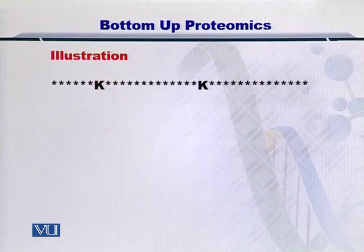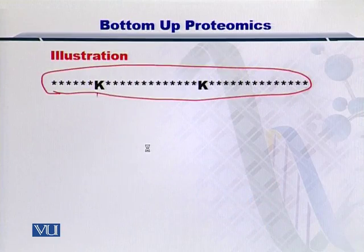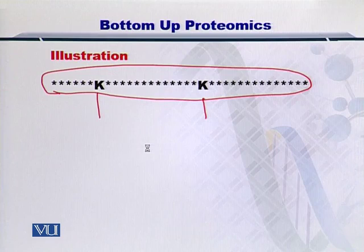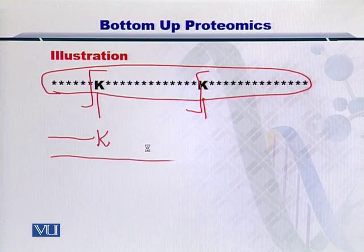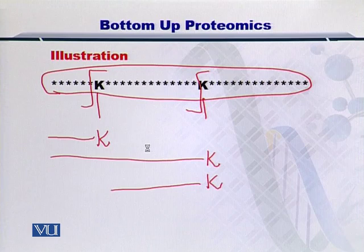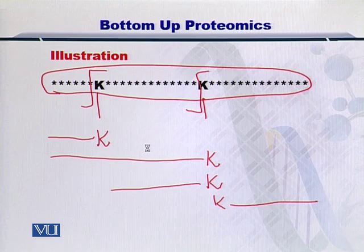Let's take a look at an example. Here you have a protein sequence which contains two lysines. If you treat this protein with trypsin, then trypsin will cleave here and here. So the possibilities are: you can have the protein cut at lysine, or you can have this part of the protein and lysine, or you can have this part of the protein and lysine, and so on. There are so many possibilities that exist for cutting a protein at the specific site.